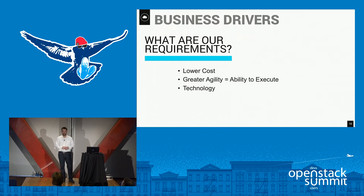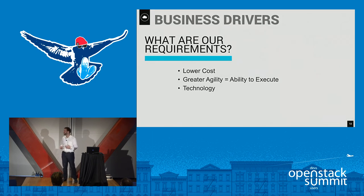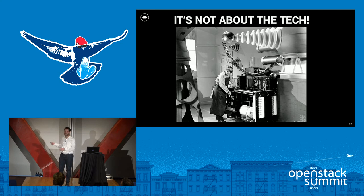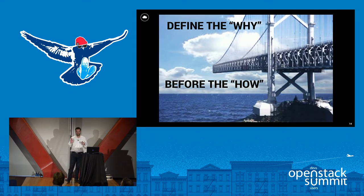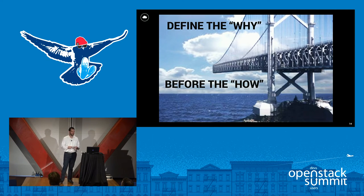To package that up: the business drivers in the context of OpenStack and the enterprise have to relate to a specific business need or identified driver — cost, agility equals greater ability to execute, and technology. I put technology last. I'm an engineer and I like technology, but if we make the whole conversation about making technology do cool things, we're going to lose the business people. And defining the why before the how is super important when talking to a business about adopting new technologies like OpenStack.